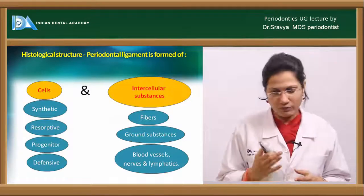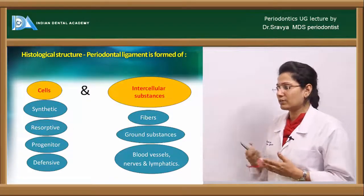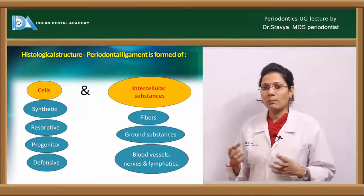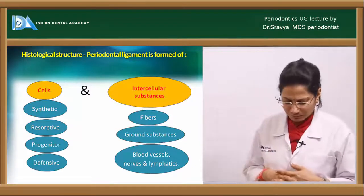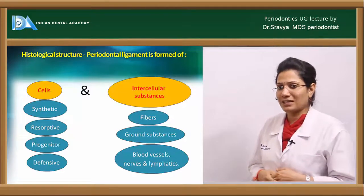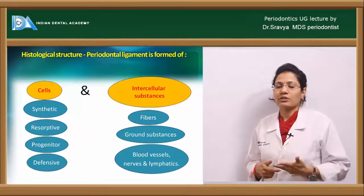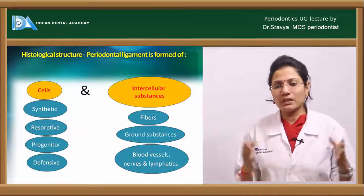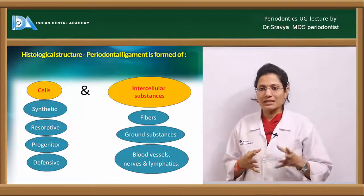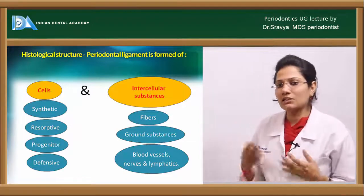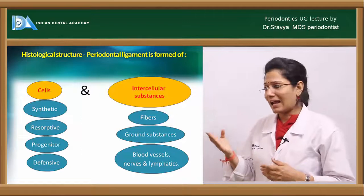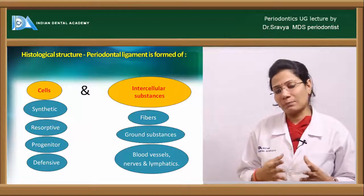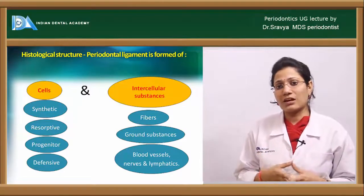The histological composition of the PDL is divided into cellular and extracellular components. The cellular components include synthetic cells, resorptive cells, progenitor or mesenchymal cells, and defensive cells. Additionally, there are epithelial cell rests of Malassez, which are remnants of Hertwig's epithelial root sheath.